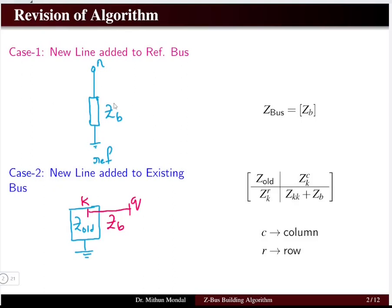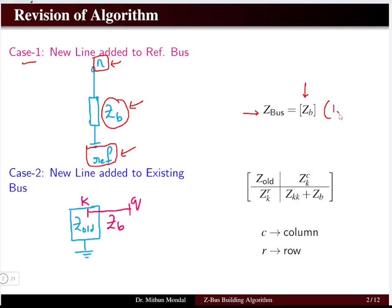Case 1 is when a new line with impedance Zb is added between a reference bus (the ground bus) and a new bus. Since this is the first step in building the Z-bus algorithm, we have only one impedance Zb, so only one row and one column exist in the Z-bus matrix.